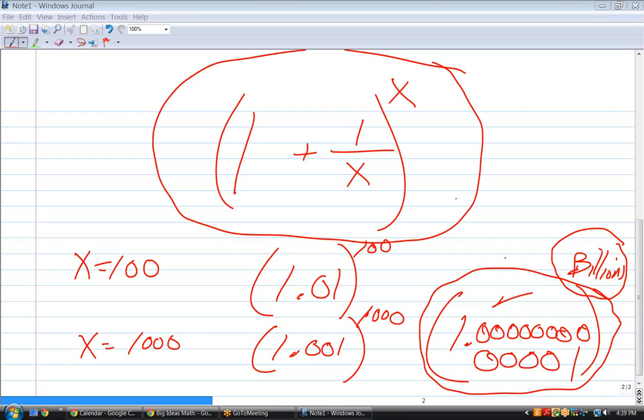So what happens when you have that irresistible force meeting an immovable object? What happens? Well, you kind of have that going on here. The number inside the parentheses gets closer and closer to one. The number, the exponent, gets bigger and bigger. Well, this number goes to e.